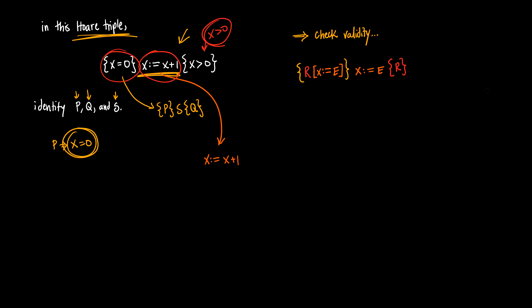So how can we check the validity of a Hoare triple? How can we determine whether or not it is a valid set of a program, a precondition, and a postcondition? Your intuition might say let's take the precondition and apply the program to it and see if we get the postcondition. But this is actually not the case. In reality, we take the assignment statement and the postcondition and apply the assignment statement to the postcondition, and we check if we get something that satisfies the precondition.